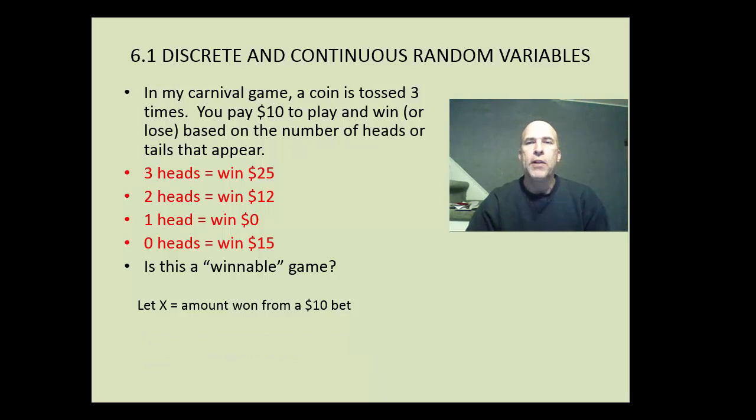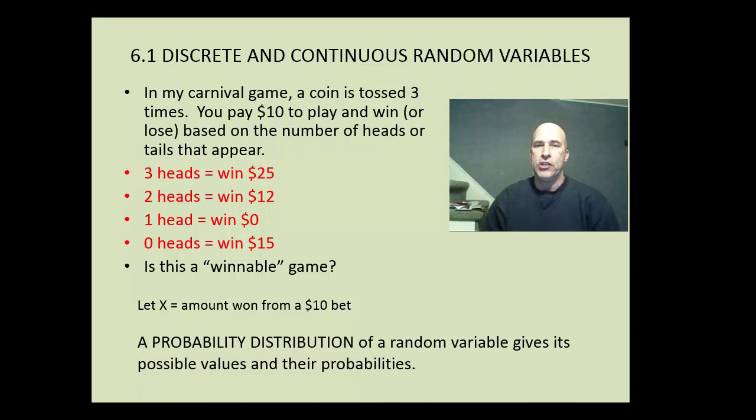So what we'd like to do here is we would like to analyze the probability of what's going on here. And a probability distribution of a random variable gives all the possible values and their probabilities. This is simply going to be a list of everything that can happen in our game, along with the probabilities. So this is really a coin tossing game. And it's three coins, so we can easily just list all the outcomes of tossing three coins.